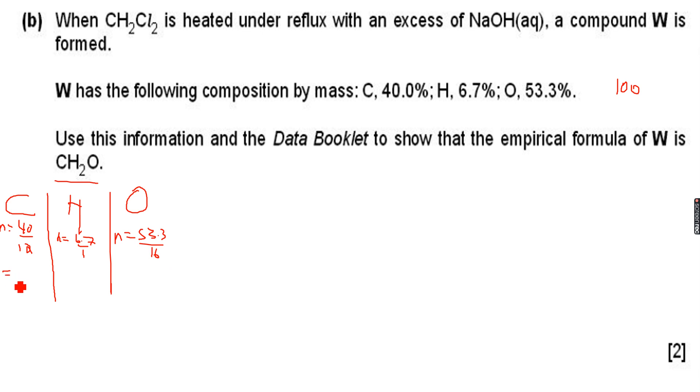So 40 over 12, when I do this on my calculator, is equal to 3.33. 6.7 over 1 is equal to 6.7. And 53.3 over 16 is equal to 3.33 again.